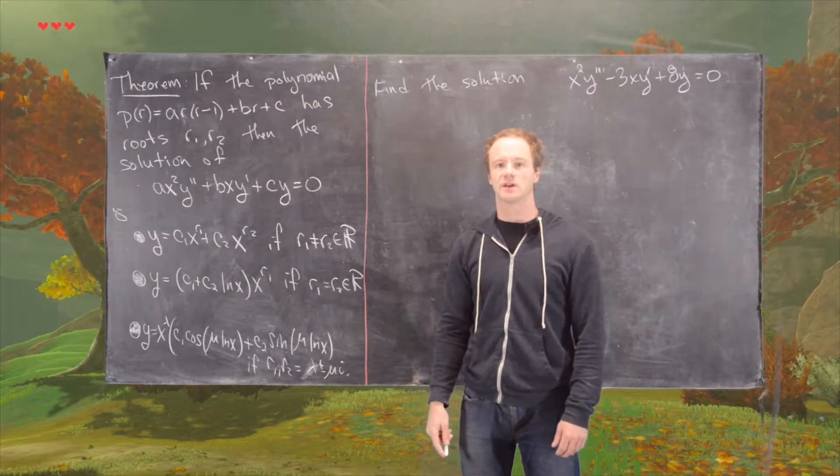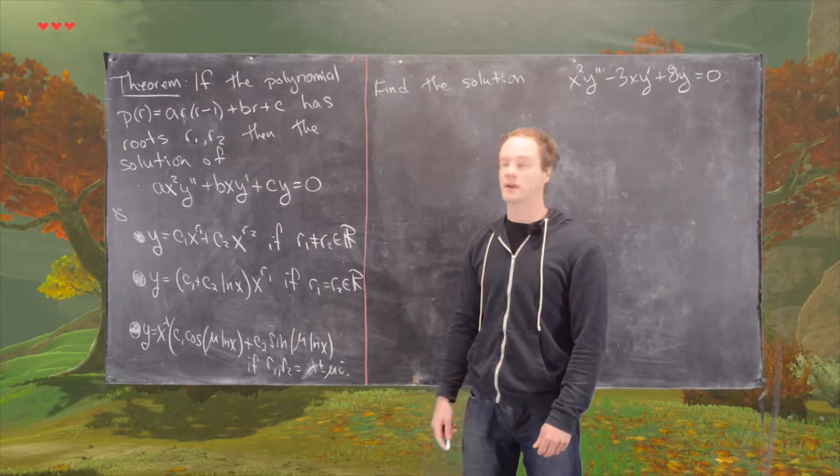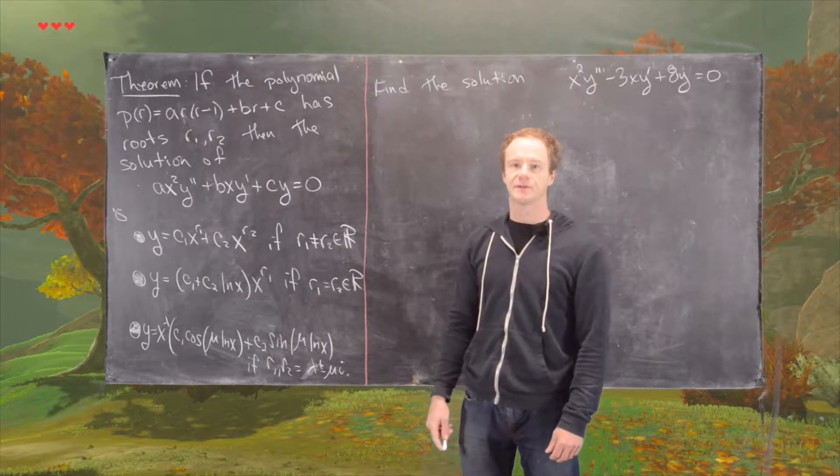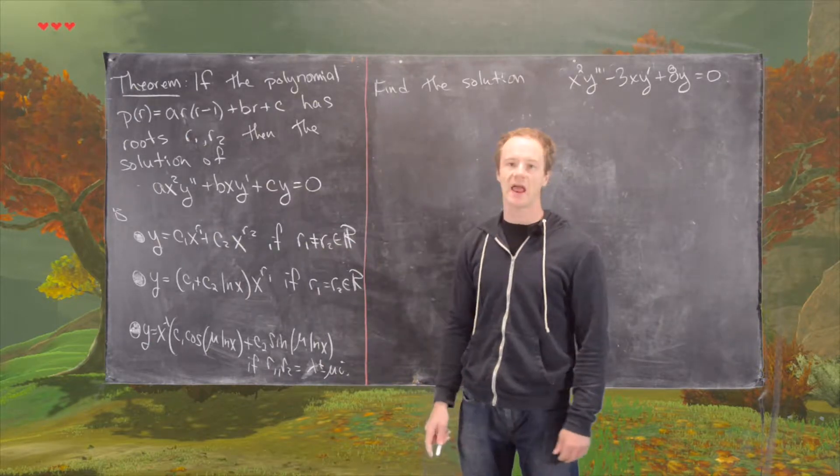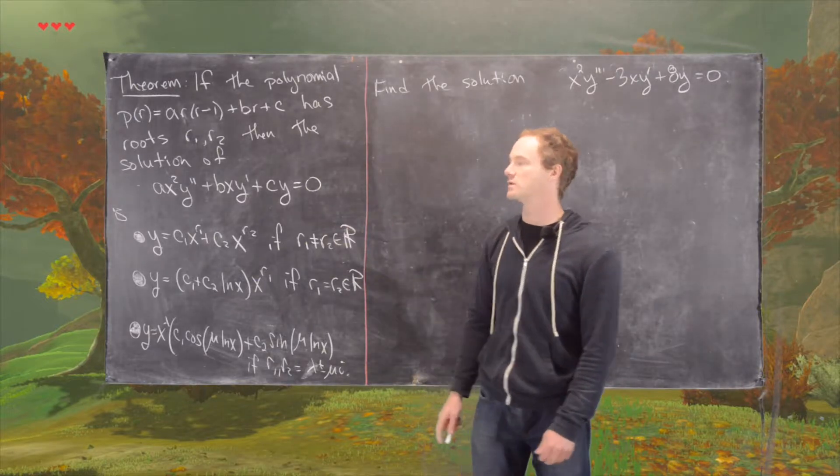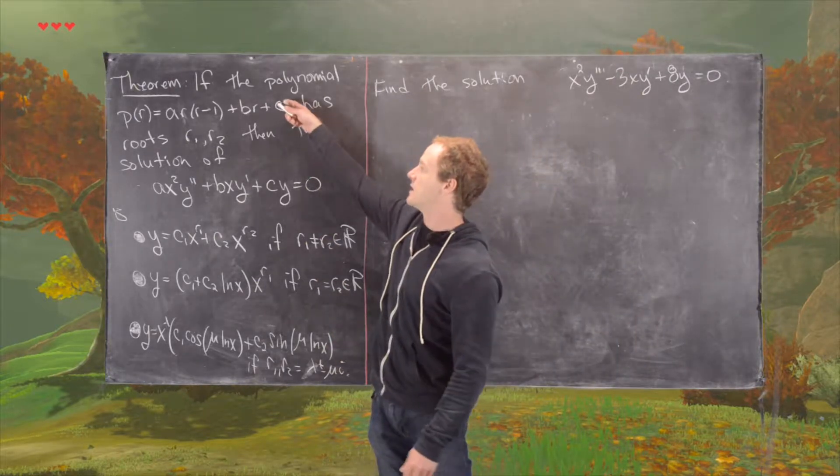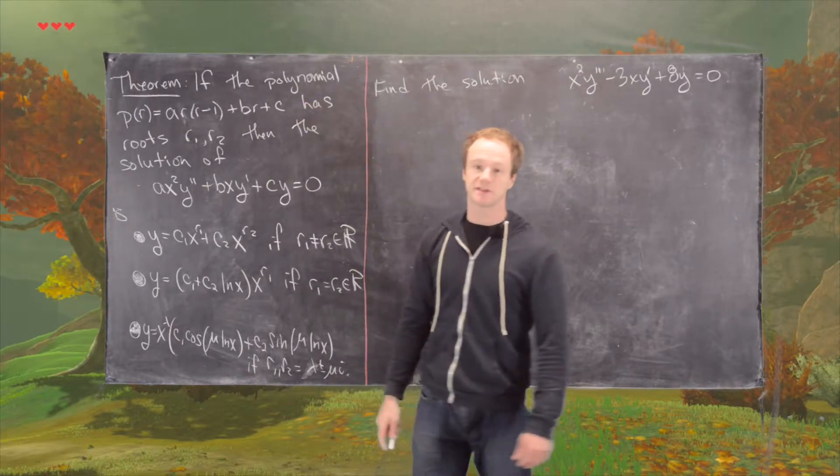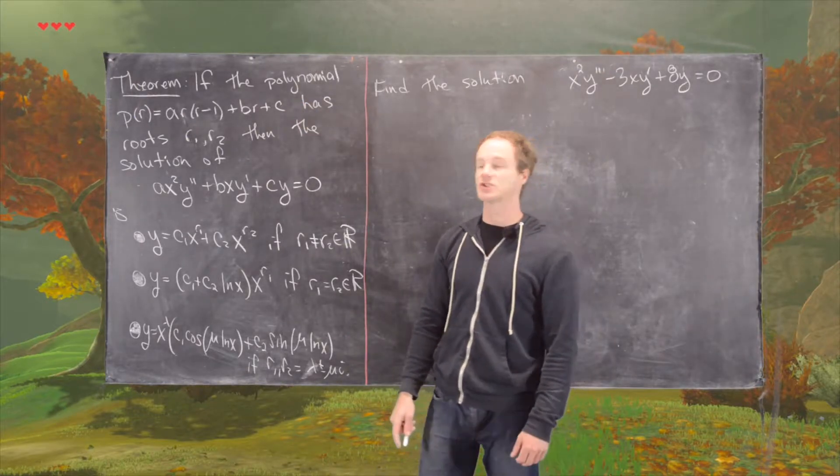In this video we're going to solve an example of an Euler equation. That's a class of differential equations of the form AX squared Y double prime plus BXY prime plus CY equals zero.